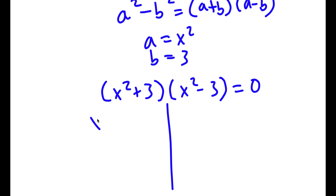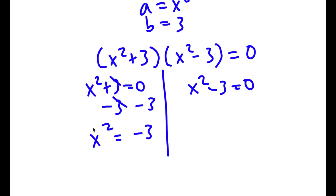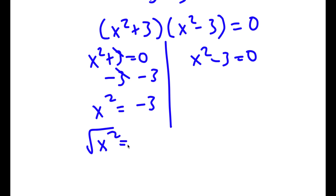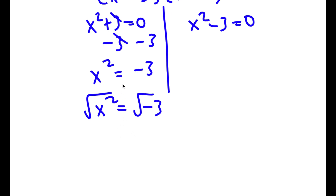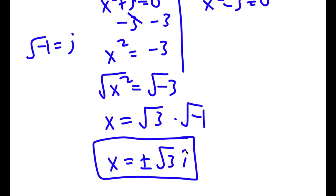This gives two equations: x squared plus 3 equals 0, and x squared minus 3 equals 0. For x squared plus 3 equals 0: subtracting 3 from both sides gives x squared equals negative 3. Taking the square root of both sides, x equals plus or minus the square root of negative 3, which is plus or minus the square root of 3 times the square root of negative 1. Since the square root of negative 1 equals i, we get x equals plus or minus the square root of 3 times i. These are two complex solutions.